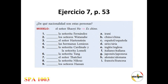Ejercicio 7, página 53. ¿De qué nacionalidad son estas personas? — What's the nationality of these persons? For example, el señor Chaoyi He — you say es chino. You can also say 'el señor Chaoyi He es chino,' but the subject is not that necessary; you simply write in Spanish: es chino, es china, es cubano, es cubana, es guyanés, es guyanesa.